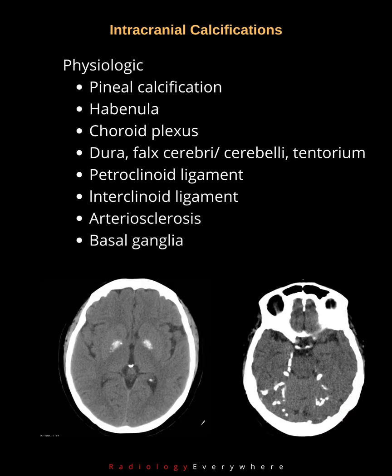Physiological calcifications: pineal calcification, habenula, choroid plexus, dura — falx cerebri, falx cerebelli, tentorium — petrocleinoid ligament, bluntocleinoid ligament, arteriosclerosis, and basal ganglia.